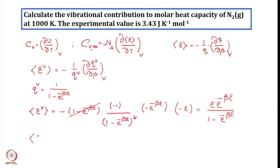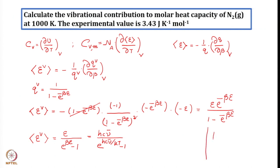This can be written as E over exponential beta E minus 1, which equals H C nu bar over exponential H C nu bar by K T minus 1. Using K theta V equal to H C nu bar, the mean vibrational energy is K times theta V over exponential theta V by T minus 1.